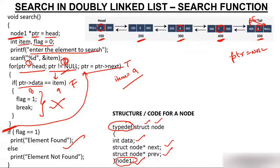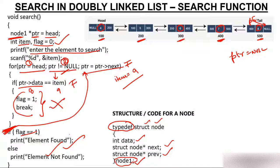You check again: is PTR not null? No — PTR is null, condition is false. You come out of the loop. You check: is flag 1? No, because you never entered the if block, so flag remains 0. You go to the else part and print 'element not found', which is absolutely correct since 9 was not in the list. This was all about how to search an element in a doubly linked list.